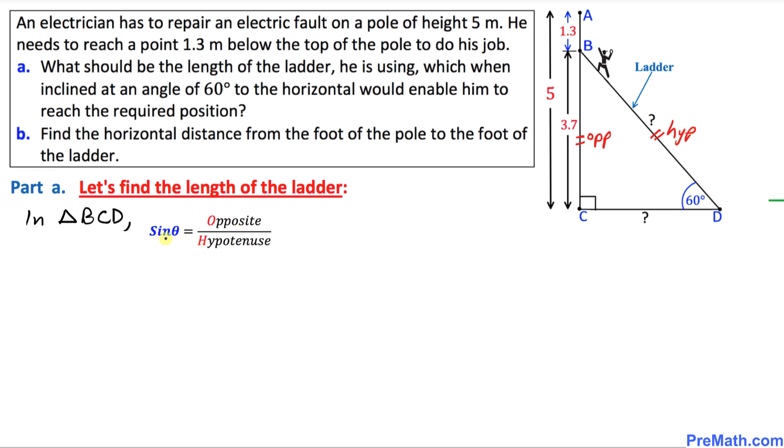Our appropriate trigonometric ratio is going to be sine theta. And we know that the theta angle is 60 degrees. This is simply going to become sine of 60 degrees equal to, as you can see, our opposite height is 3.7 meters, 3.7 divided by BD. We need to figure out the length of this hypotenuse, the ladder. We need to find out the value of BD.